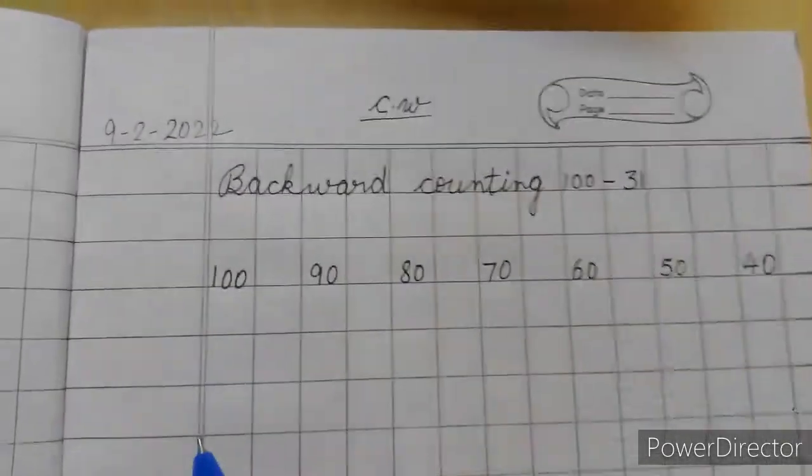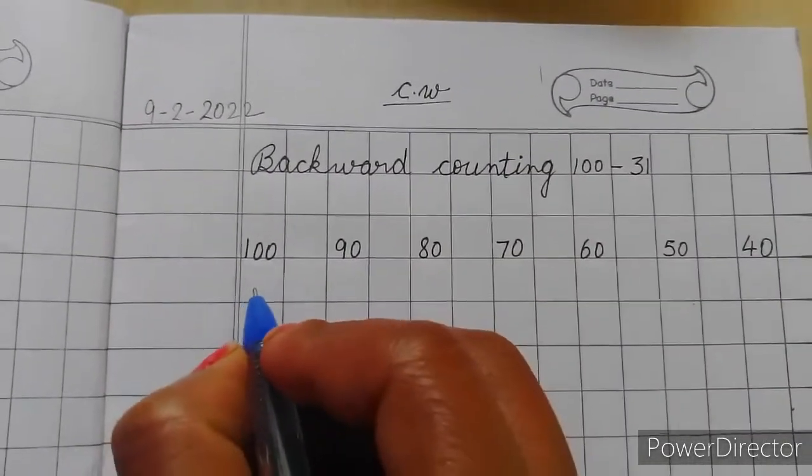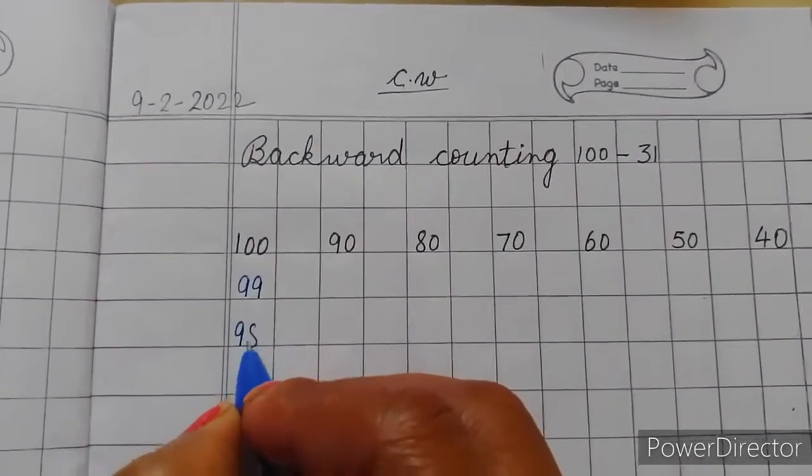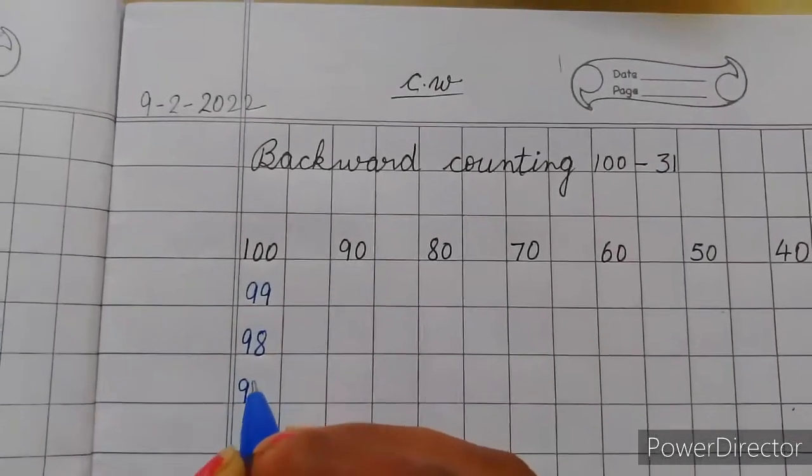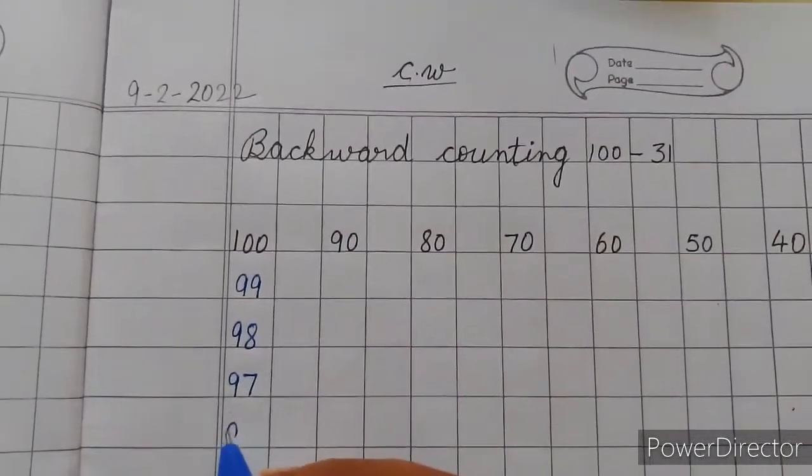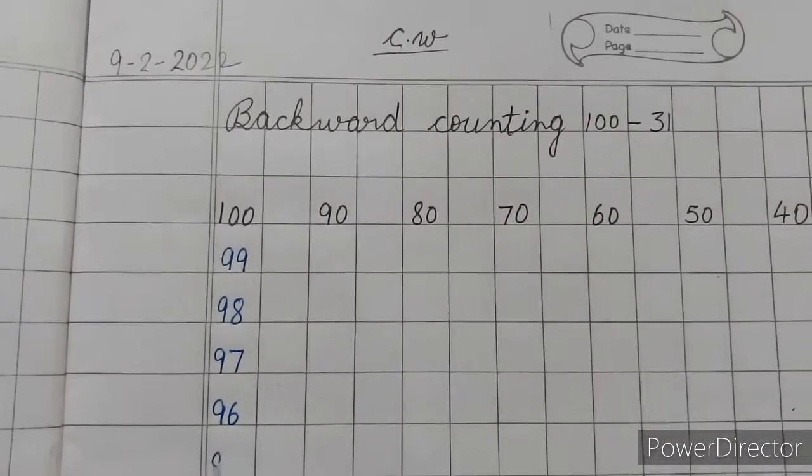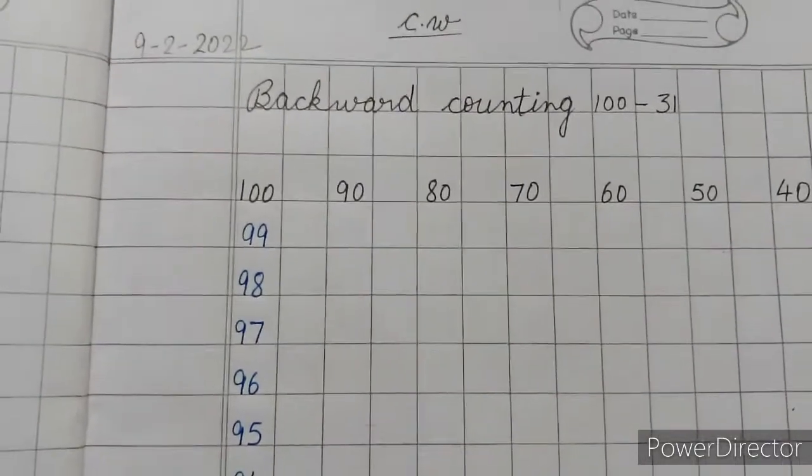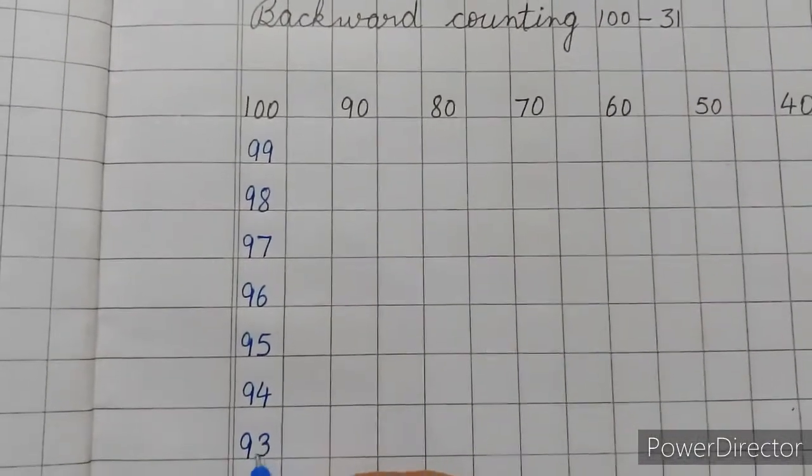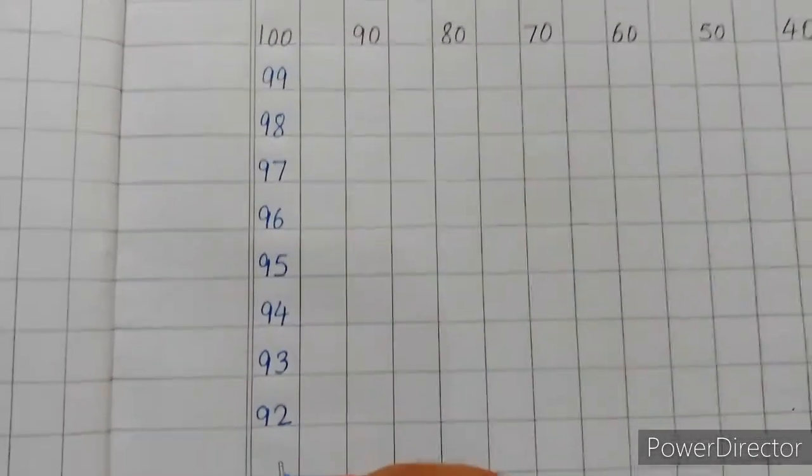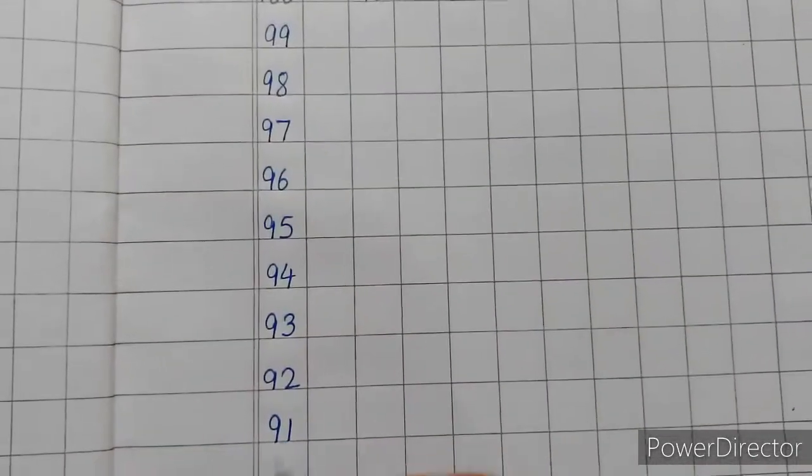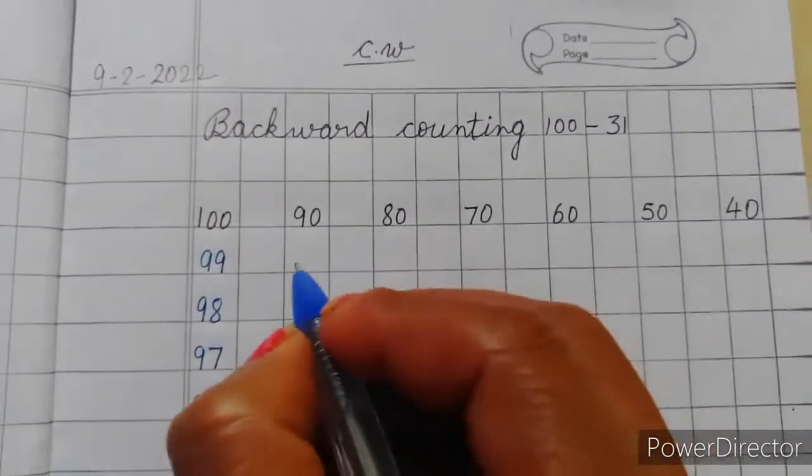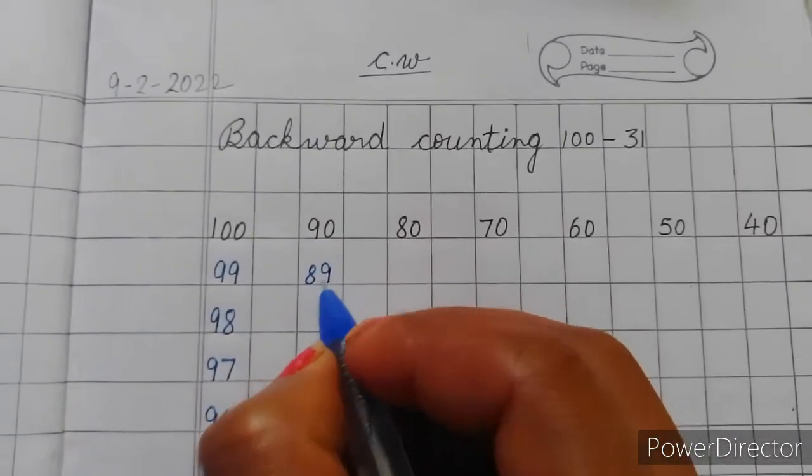100. Then before 90, 9, 9, 8, 98, 97, 97, 96, 96, 95, 95, 94, 94, 93, 93, 92, 92, 91, 91. Then before 91.